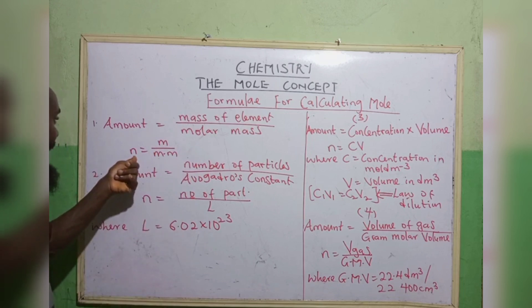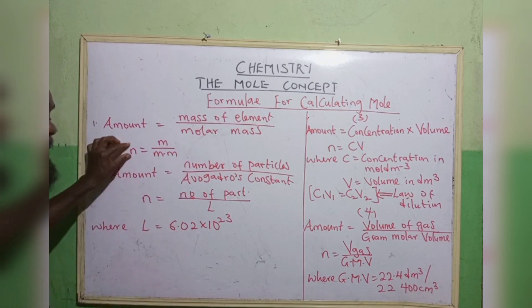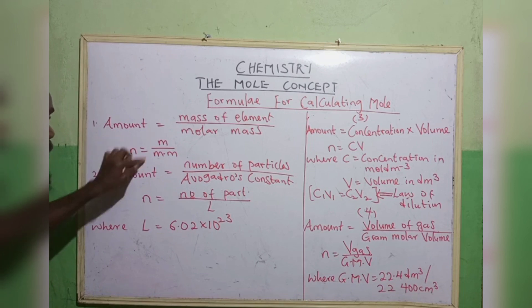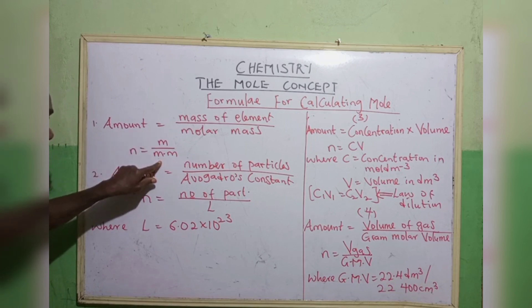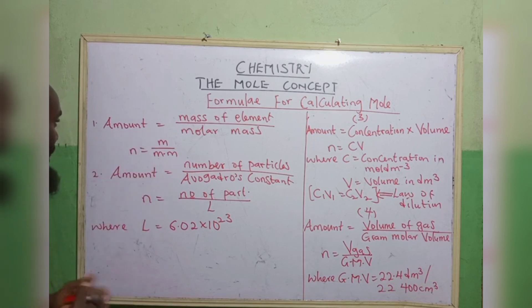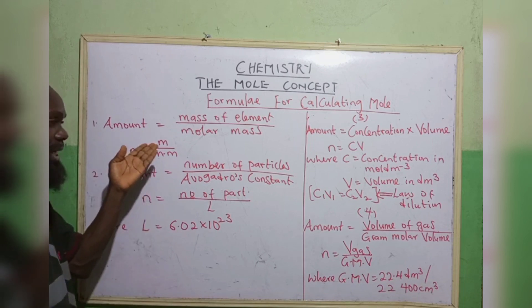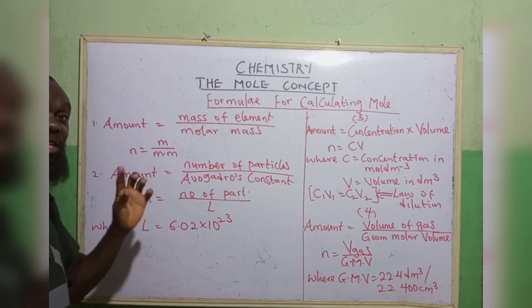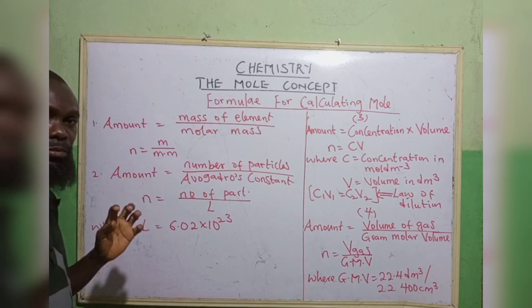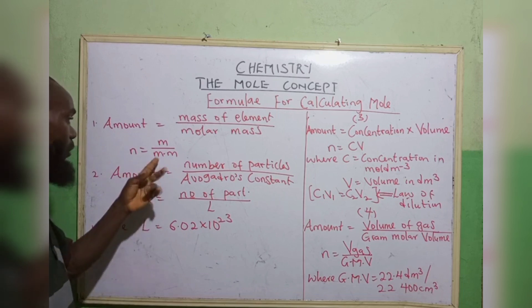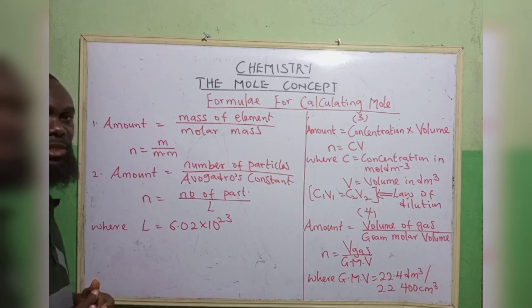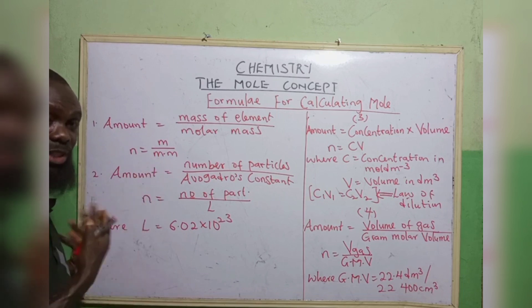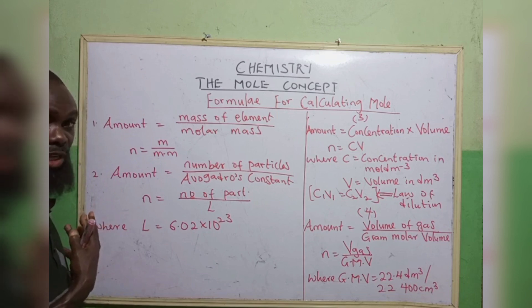Don't forget the unit of your mass is in grams, while the unit of your molar mass is in grams per mole. We've done this in our previous classes.